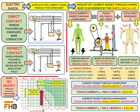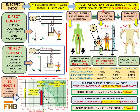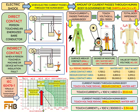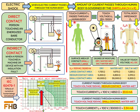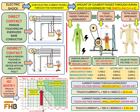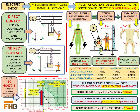As per IEC 60479-1, touch voltage is considered from 25 volts to 1000 volts and can be both AC or DC. The body impedance as per IEC 60479-1 depends on many factors — most importantly on the current path and the duration of current flow through the body, as shown in the picture. Other factors include the surface area of contact with live or faulty parts, the degree of moisture of the skin, and the touch voltage including its magnitude and type — AC or DC.